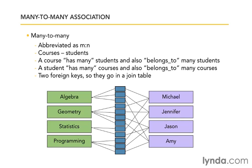So whenever we want to know the students taking algebra, we go to our join table, find everything that has the algebra ID on one side, get a list of IDs, and look up the corresponding students. And vice versa — if we want to know which courses Michael is taking, we go to the join table, find everything with Michael's ID, and use the other foreign key to figure out which courses that corresponds to. If this concept isn't already familiar to you, you might want to pause here and make sure you have a clear understanding of why this is true before we go on.